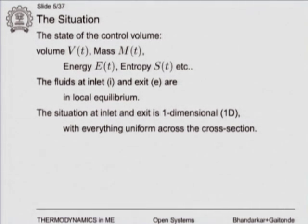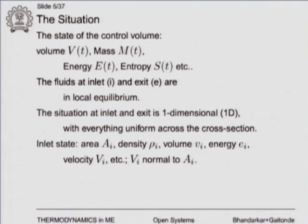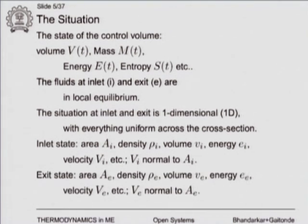Right now we have one inlet and one outlet. For the inlet state, the fluid has properties: density, specific volume, energy, velocity, etc., entering through area A_i. For the exit, there are corresponding properties at area A_e — density, specific volume, energy, velocity, etc.